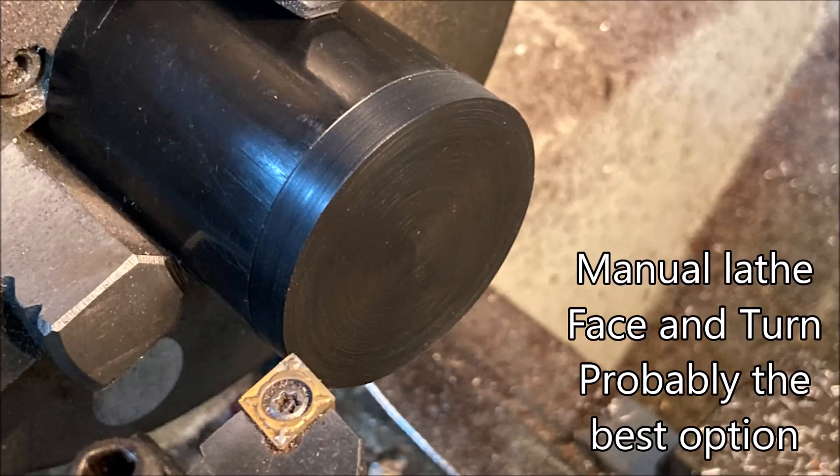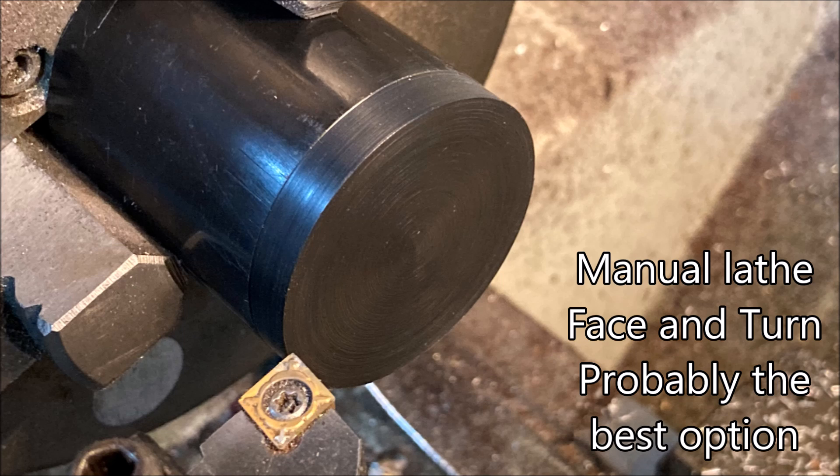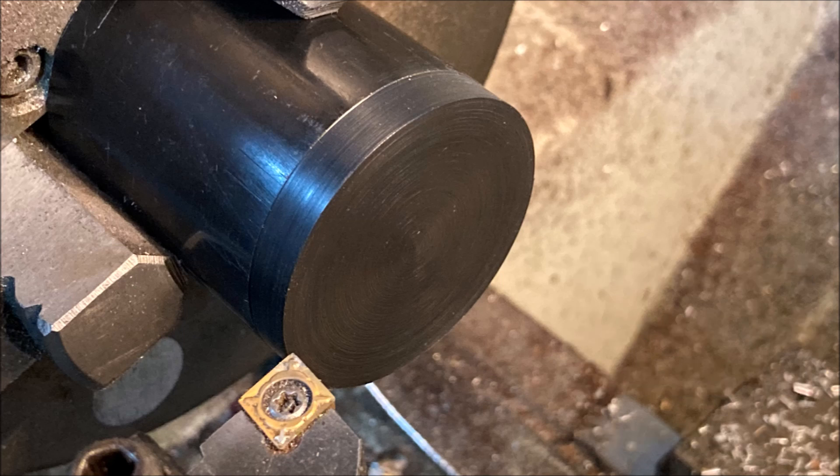So it really does look as though I'll have to do this—just face it off and maybe turn the end as well. With the DRO, I can just set the diameter and clean that up as well. Not what I wanted to do, but it looks as though this is going to be the way the job has to be done.